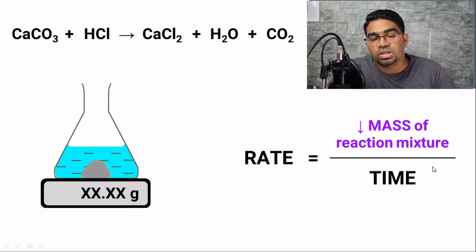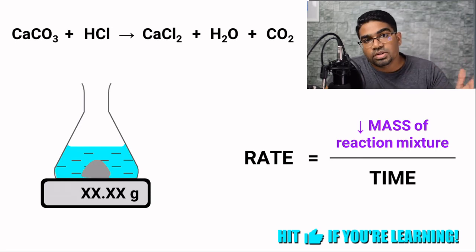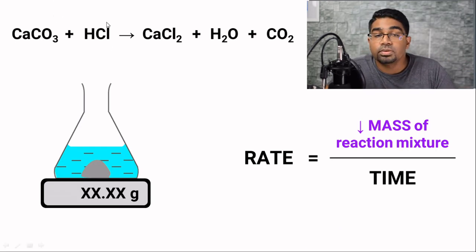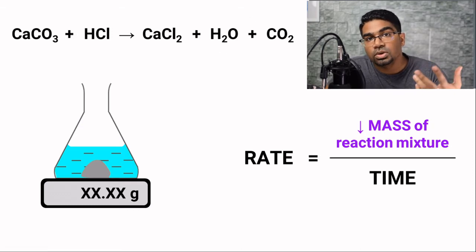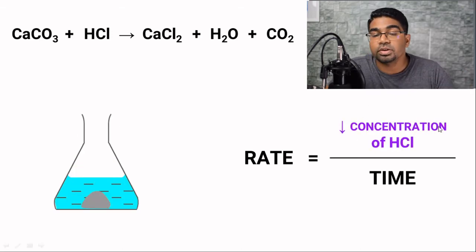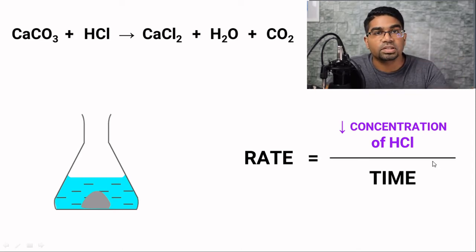Another quantity that we can measure is the concentration of the acid. The concentration of the acid can be easily tracked by using a pH meter. As the reaction progresses, the concentration of this acid is bound to decrease, because more and more of the hydrogen ions are going to collide with the calcium carbonate in order to form the products. This is also a reflection on how fast the reaction is taking place. If the decrease in the concentration of hydrochloric acid is greater for one unit of time, then we could say that the rate of reaction is higher.